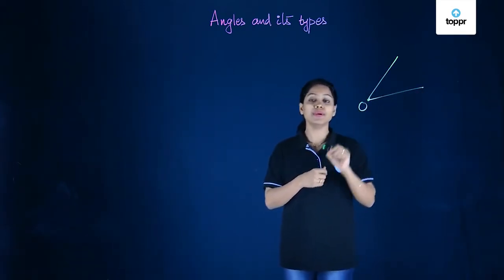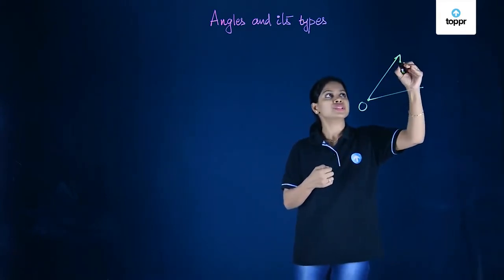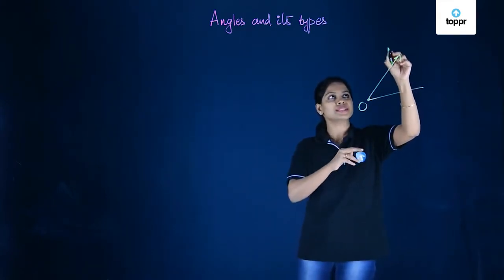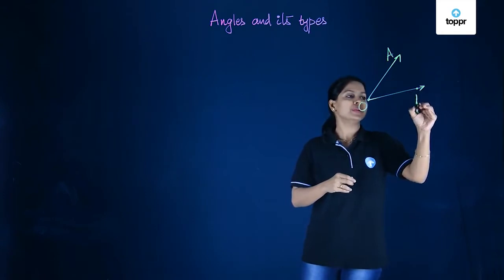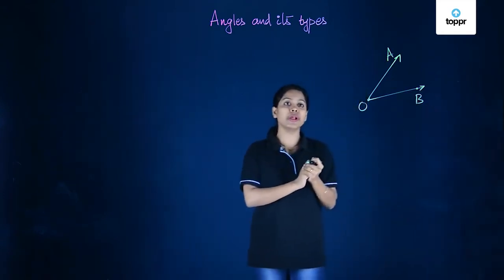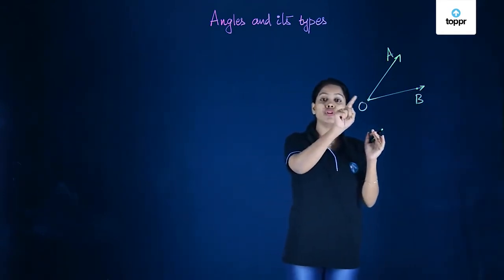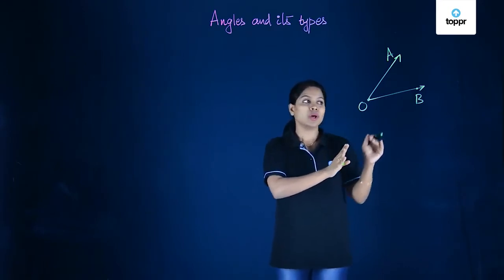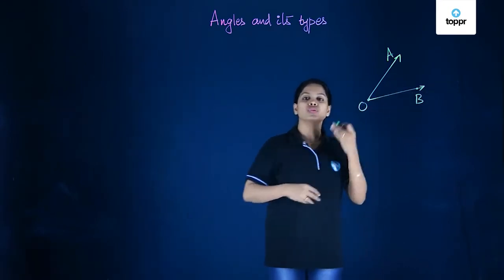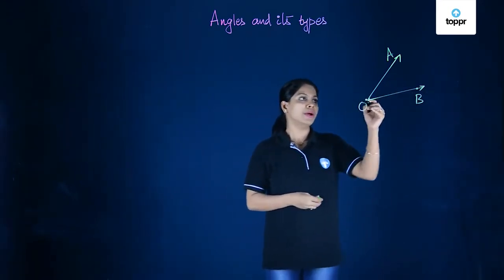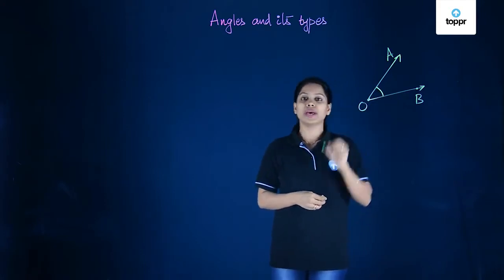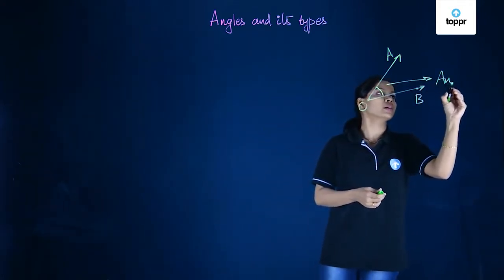It has a common point. If we name it as O, and this here as A, and this here as B, what we have drawn are two rays that have a common point O. It could be a ray or a line segment, but this is called an angle.